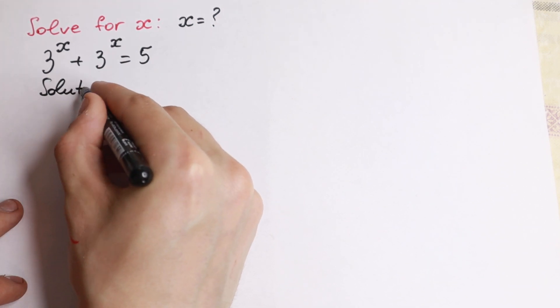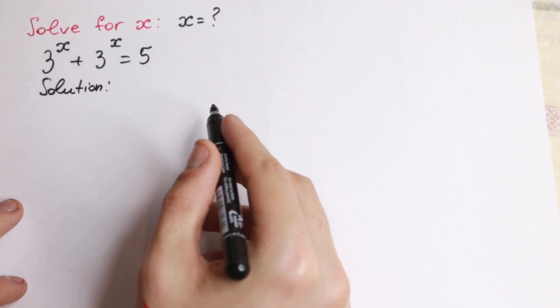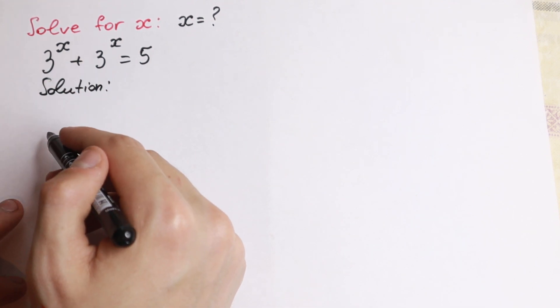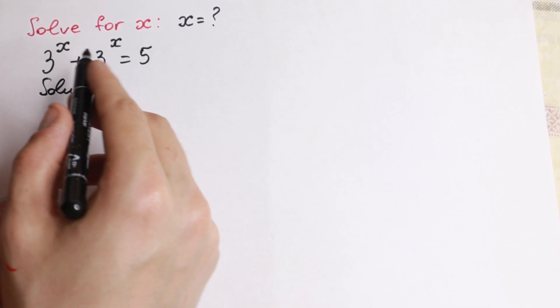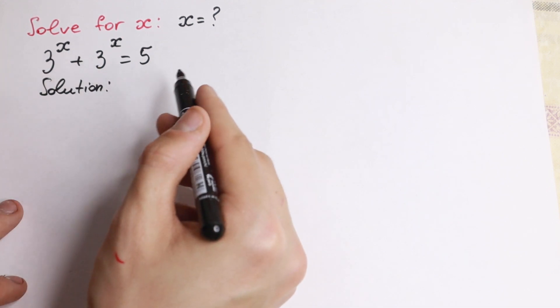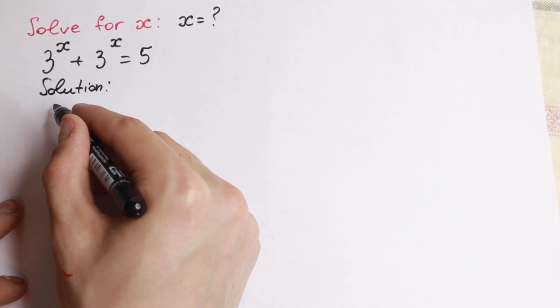Solution: How can I solve this interesting equation? First of all we have two same elements, so we can easily factor out 3 to the power x, or we can write it as 2 times 3 to the x, but I want to show you this with factoring.